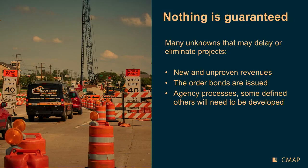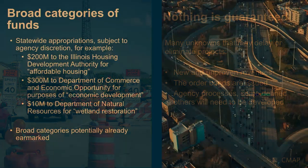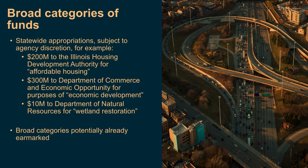All projects and programs could get delayed or eliminated — due to revenues that don't come in, uncertainty about how bonds will be issued, or agency processes that need to be developed to manage the money. Some agencies have never managed funds at this scale before. There are also broad categories of funds that make it hard to make high-level statements about where money will go, such as the $200 million to the Illinois Housing Development Authority for affordable housing — we don't know what specific programs that'll go toward until managing agencies make their plans public.